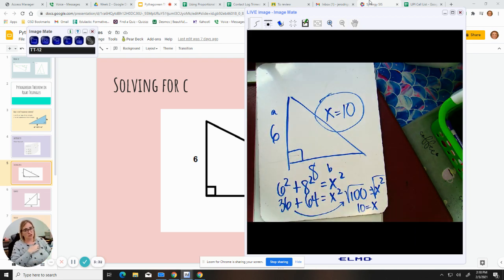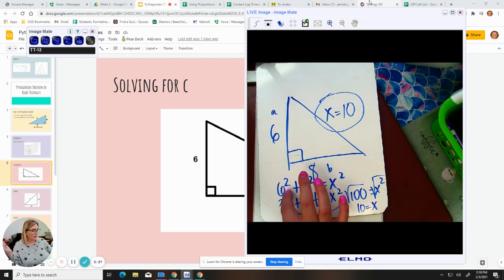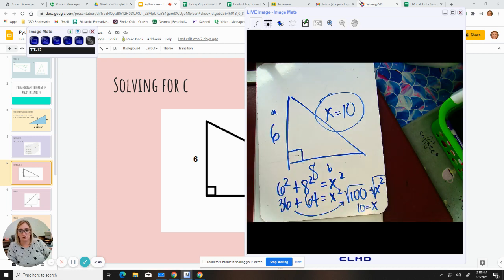Again, make sure you're not timesing by 2, but you're squaring. That means it's by itself. That's why 6 squared is 6 times 6, which is 36. 8 squared is 8 times 8, which is 64. And that's how you get this answer 10. 10 squared or 10 times 10 is 100. So that's how you know your answer.